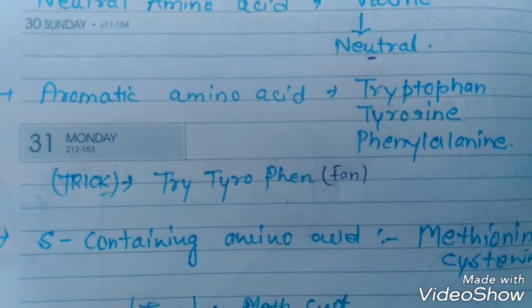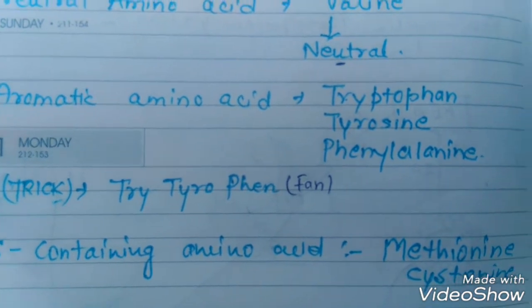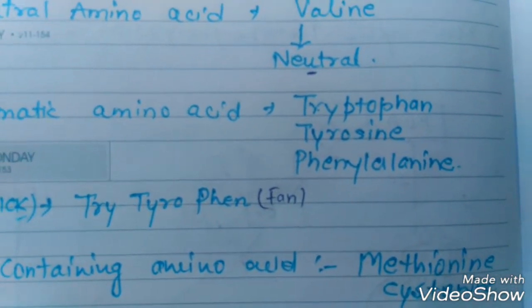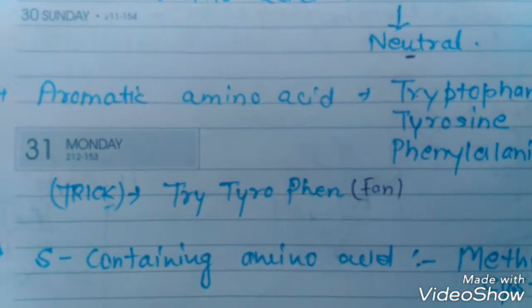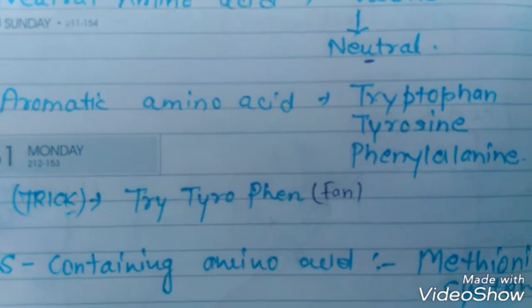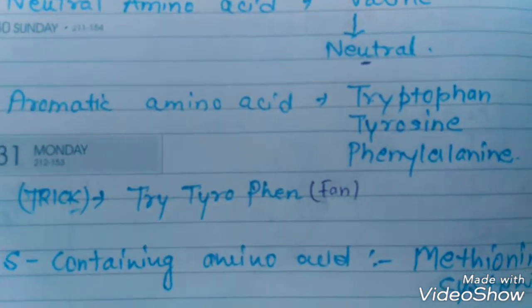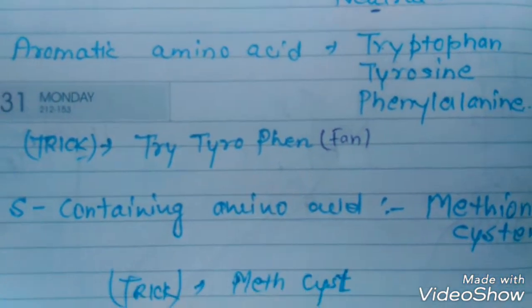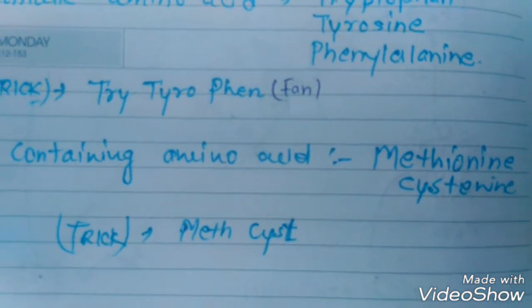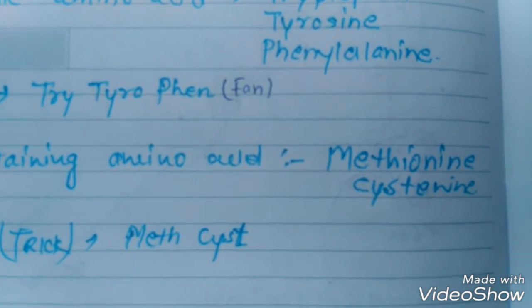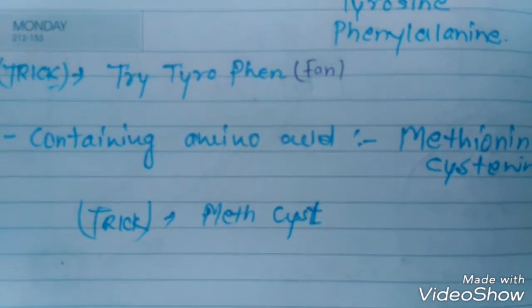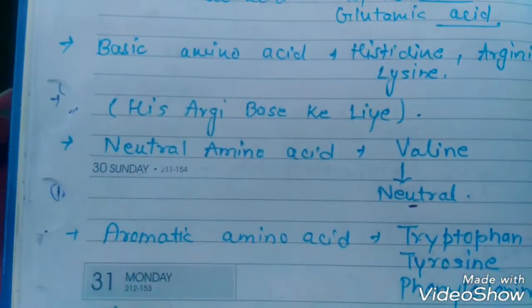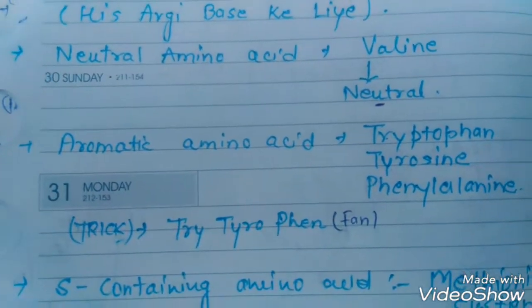Now we are talking about aromatic amino acids. Examples are tryptophan, tyrosine, and phenylalanine. The trick is 'ITF' — I for tryptophan, T for tyrosine, F for phenylalanine. So ITF is the mnemonic to remember aromatic amino acids.